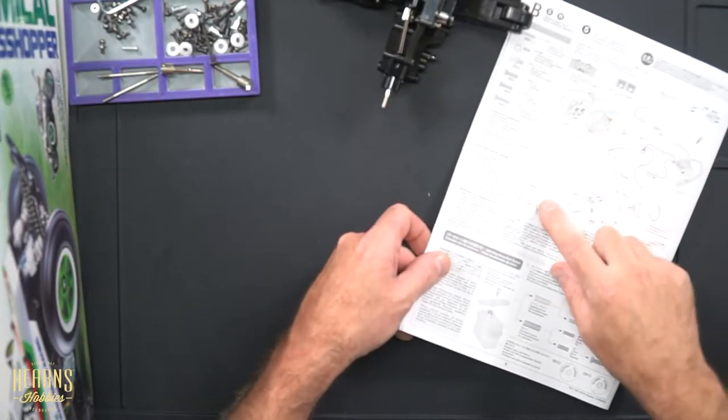Looking at step five, we're going straight into the radio gear. What they want to do is centralize the steering servo before you actually install it into the chassis, because once it's screwed into the chassis it's very hard to adjust the servo saver and alignment.